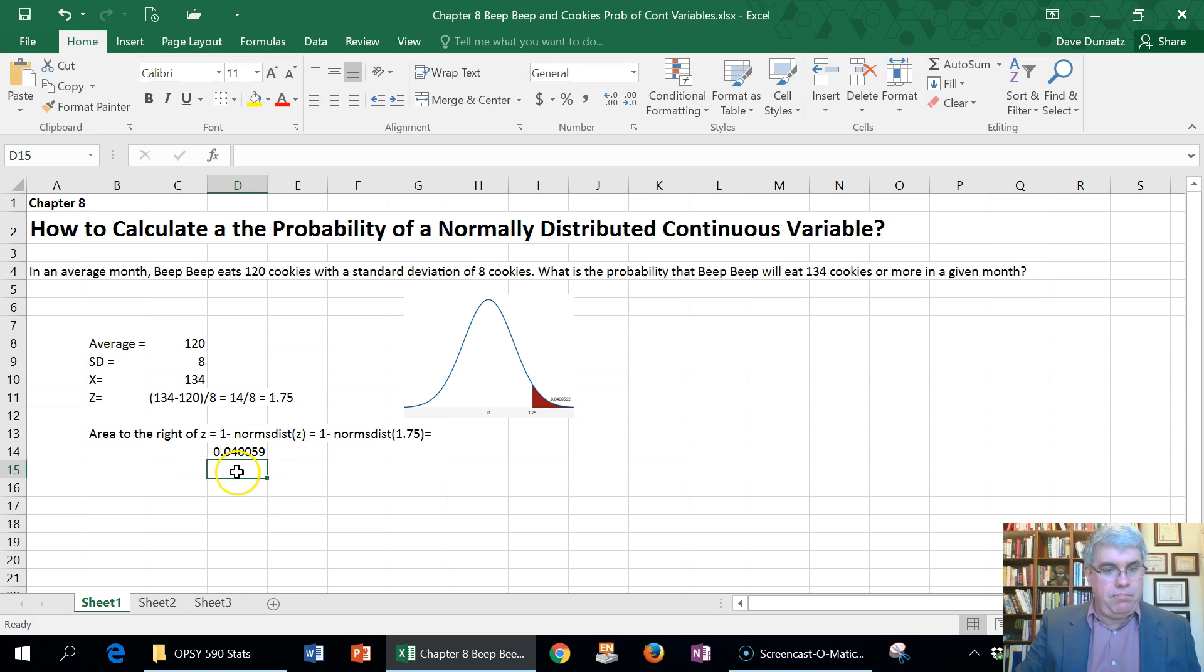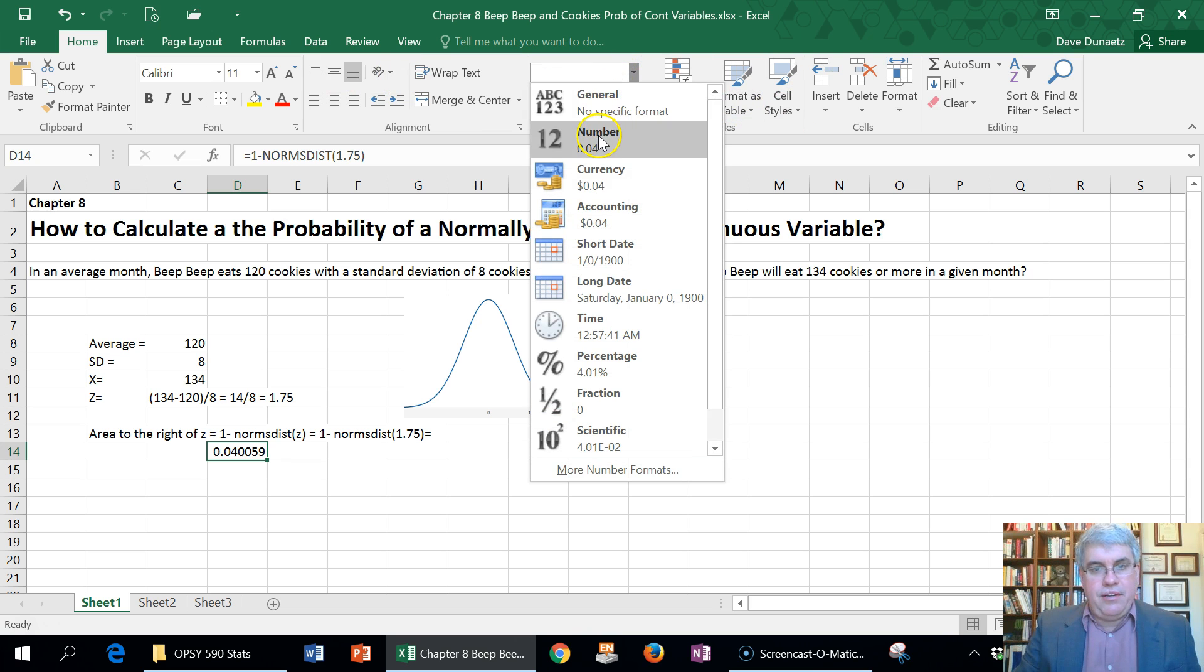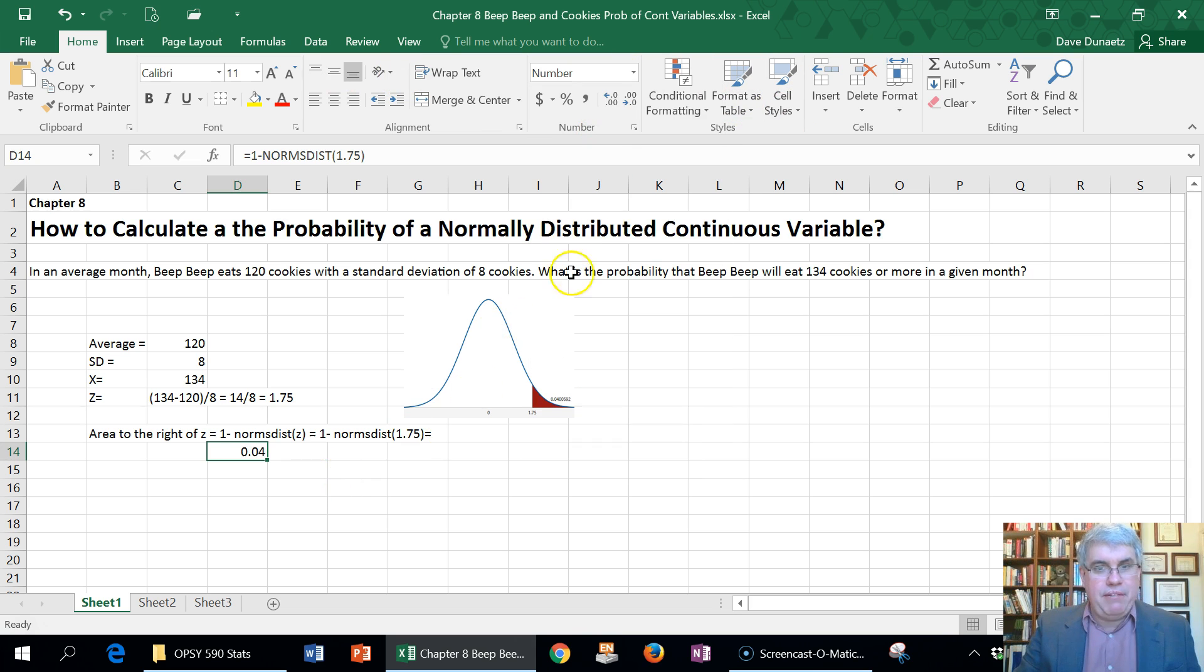And I press enter, and it does the calculation, and it's 0.040059. And we can round that down, go to general, and go to number. And we can give it one more decimal point, since it only has one significant figure there. 0.0040. So actually, we can give it another one, change that into percentage. And 4%, give it another 4.01%.